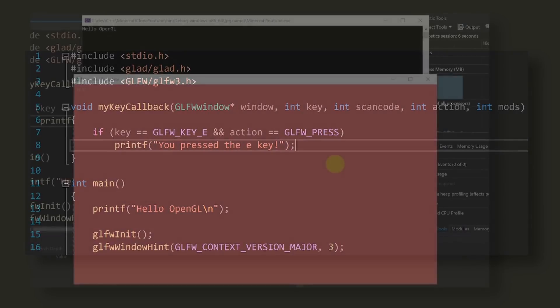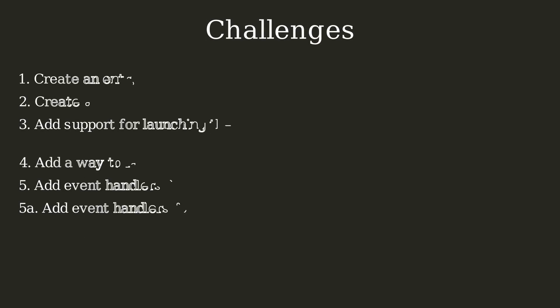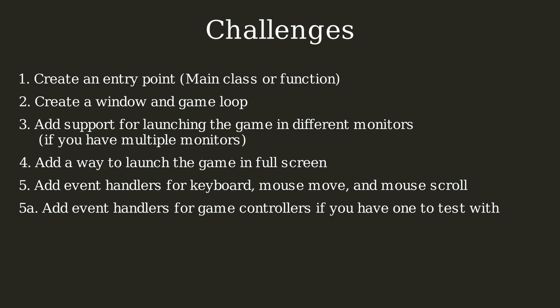Now that we've explored how to create a window and set up various hints and input handlers, here are your challenges for today. One: create an entry point for your application — the main function in C++, or the main class in Java or C Sharp. Two: inside that entry point, create your window and start your game loop. Three: if you have multiple monitors, add support for switching between them on startup. Four: add the ability to launch your game in full screen mode. Five: add event handlers for keyboard and mouse input, and if you have controllers, try adding input handlers for those as well. These challenges should utilize everything we've talked about in this episode, and if you'd like a simple function to test these capabilities, you can use the one shown here.